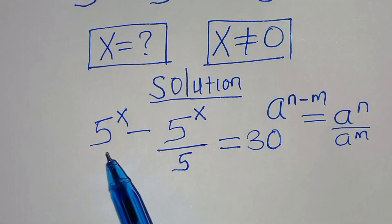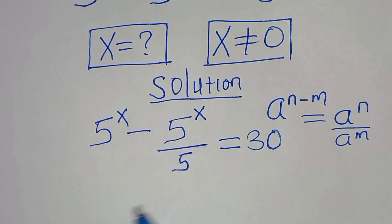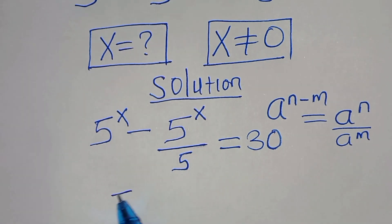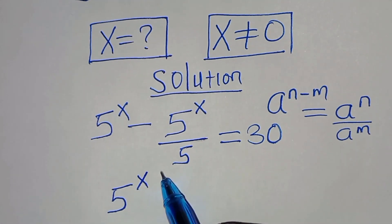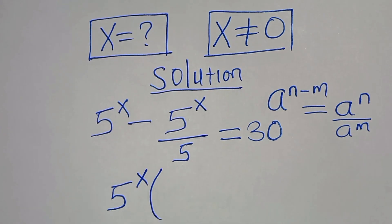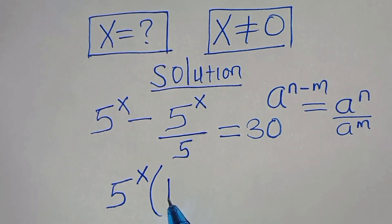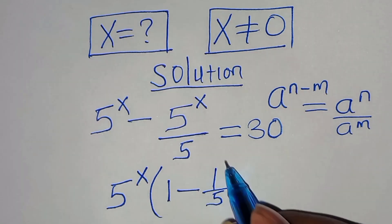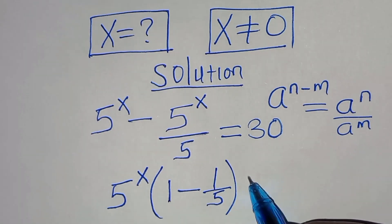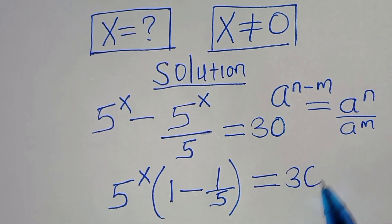Now 5^x is common, so we can factor out 5^x, so that in the parenthesis we have 1 minus 1 over 5, and this is equal to 30.